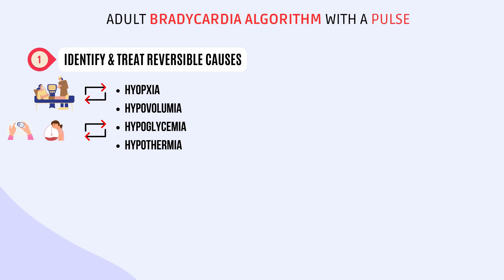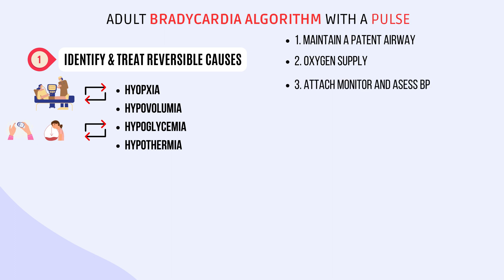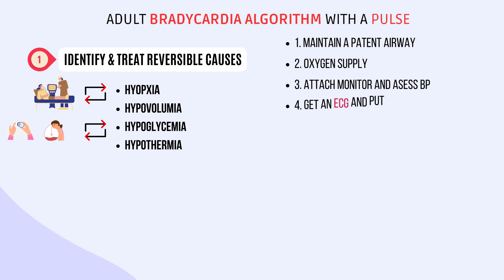Here are four key points you need to remember. First, maintain a patent airway and assist breathing if required. Next, provide oxygen supply, especially if the patient is hypoxemic. By this time, you should have been able to attach the monitor and oximeter, and have your blood pressure assessed. And obtain a 12-lead ECG if available while putting an intravenous line into the patient.